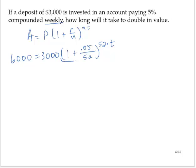The first thing I need to do is isolate the exponential and to do that I'll divide by 3000. So I have 2 equals 1 plus 0.05 over 52 to the 52t.